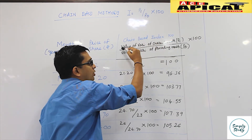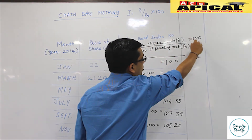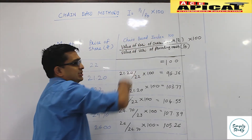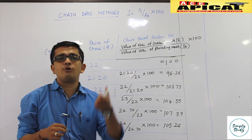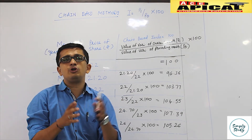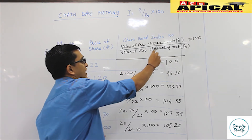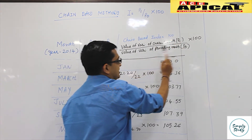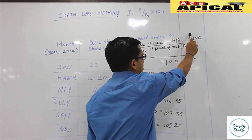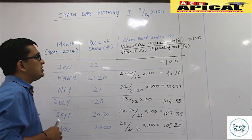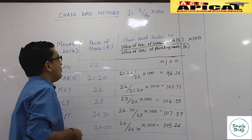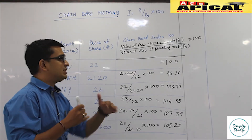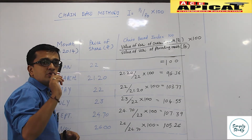Since the question is in the form of months, p1 represents the value of the variable of the current month and p0 represents the value of the variable of the preceding month, multiplied by 100. For the month of January, the value of the preceding month is not available, so the first month's chain base index number will always be 100.